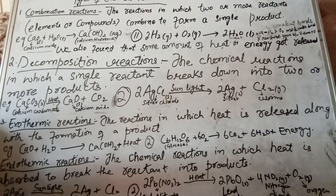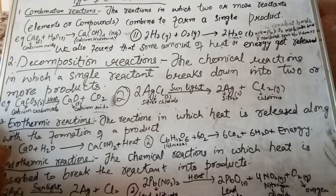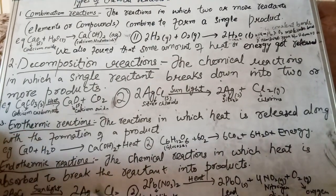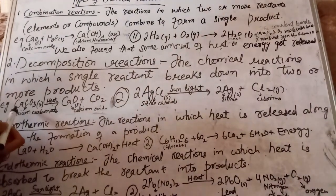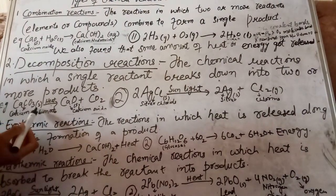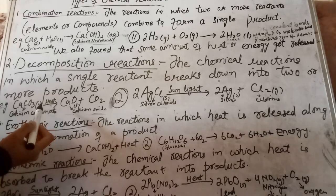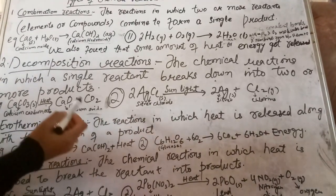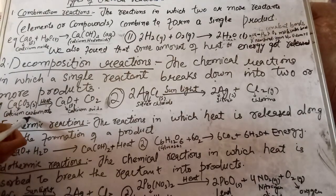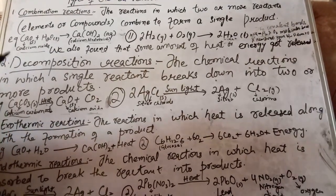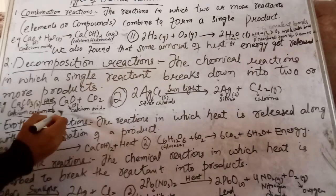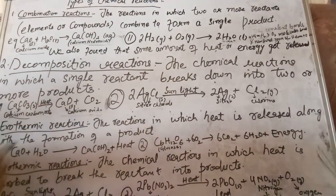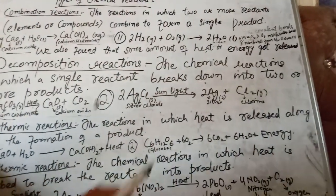How do we carry out decomposition? With the help of energy — heat, or sometimes sunlight. For example, calcium carbonate is solid in nature; when it is heated, it decomposes into calcium oxide and carbon dioxide gas. Here a single reactant, calcium carbonate, got broken and decomposed into two products: calcium oxide and carbon dioxide gas.